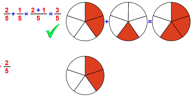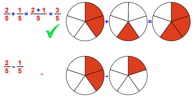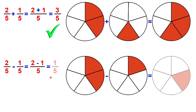Now let's subtract: 2 over 5 minus 1 over 5. Again, same denominator — you'll have the same denominator in the result, which is 5. And you just subtract the numerators: 2 minus 1 is 1. So 2 over 5 minus 1 over 5 is 1 over 5. You can also see it here — you had 2 portions, 1 was subtracted, you're left with 1. Very simple.